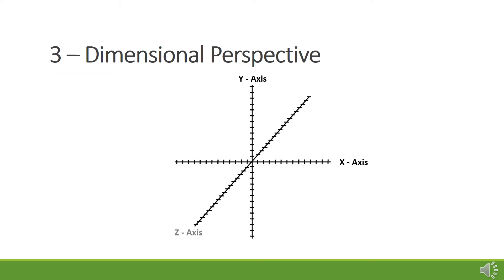This projection shows the Z axis at an angle to show it on the page. In actuality, the Z axis would be perpendicular to the other two and point straight out of the page.